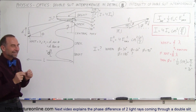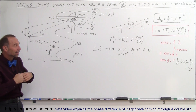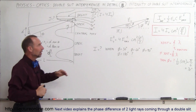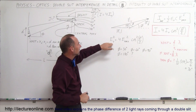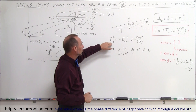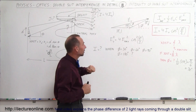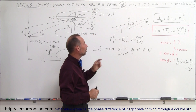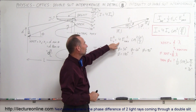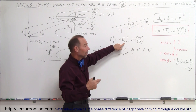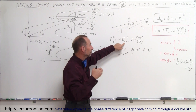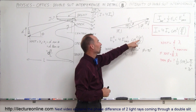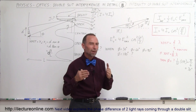We also learned that the intensity is a function of adding the electric field strengths together. The electric field strength squared of the two beams combined — because they must be added vectorially — equals four times the electric field strength of the individual beam squared, times the cosine squared of the phase difference divided by two.